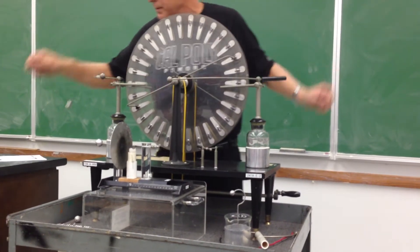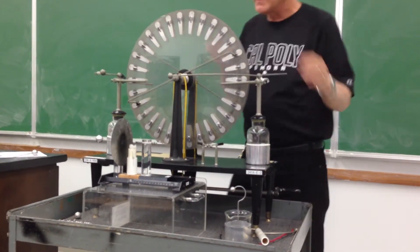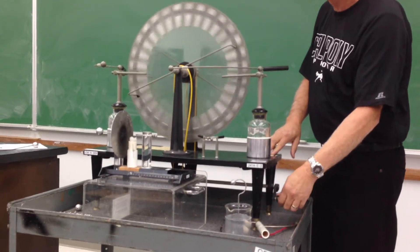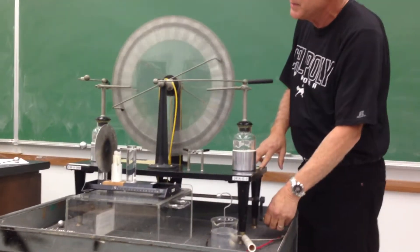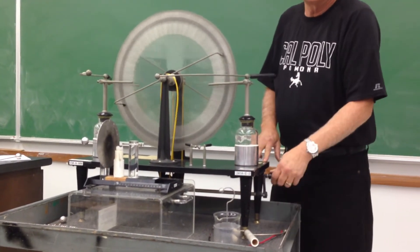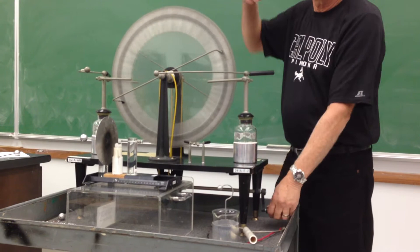Before we do the demonstration, you have two rotating discs here with metal pads on them. As the discs rotate, they rotate in opposite directions and start collecting electrostatic energy, separating the charges from the air around it.